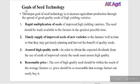Now let us discuss the goals or objectives of seed technology. The main objective is to increase agricultural production through the spread of good quality seeds of high yielding varieties. The first goal is rapid multiplication of improved seeds of high yielding varieties — the seeds should be made available to the farmers in the quickest possible time. The second goal is timely supply of improved seeds of new varieties to the farmers well in time so that they may get timely planting and harvesting, thereby getting the benefit of using quality seeds.